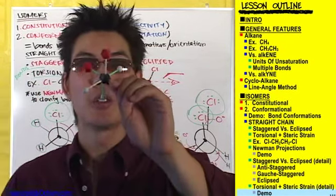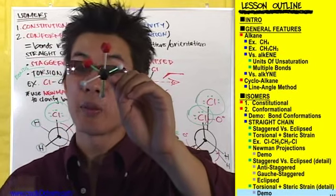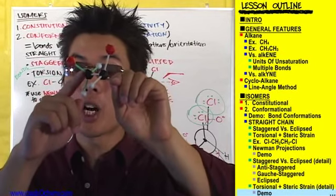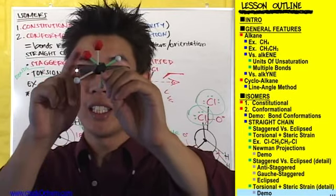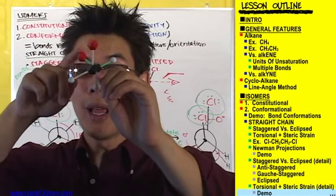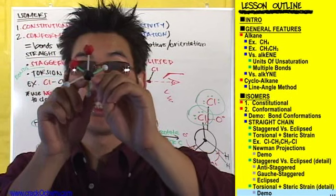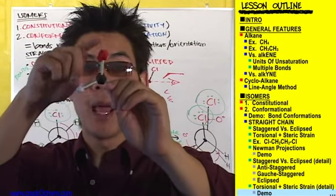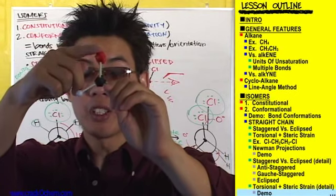Now let's see how we go from the gauche staggered conformation to the eclipsed conformation. All you're going to do is rotate the back carbon — still don't touch the front carbon. We're going to rotate this back carbon 60 degrees so that the back chlorine will now be directly aligned with the front chlorine. Let's rotate until this back chlorine is completely eclipsed by this front chlorine.